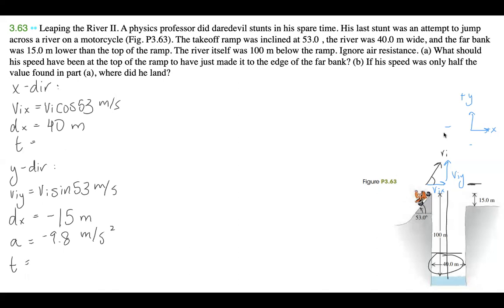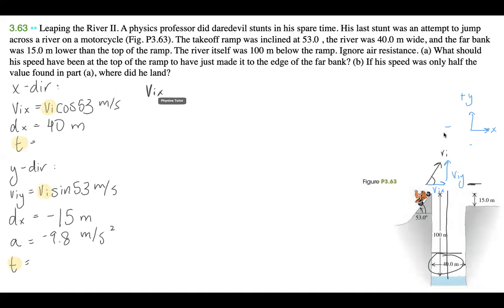So we have two unknowns: v_i and t. We can generate two equations and solve them. For the x direction, we have a simple speed equation, which we can rearrange as t equals d_x over v_ix. For the y direction, because there's acceleration, we use the kinematic equation d_y equals v_iy·t plus half·a·t².